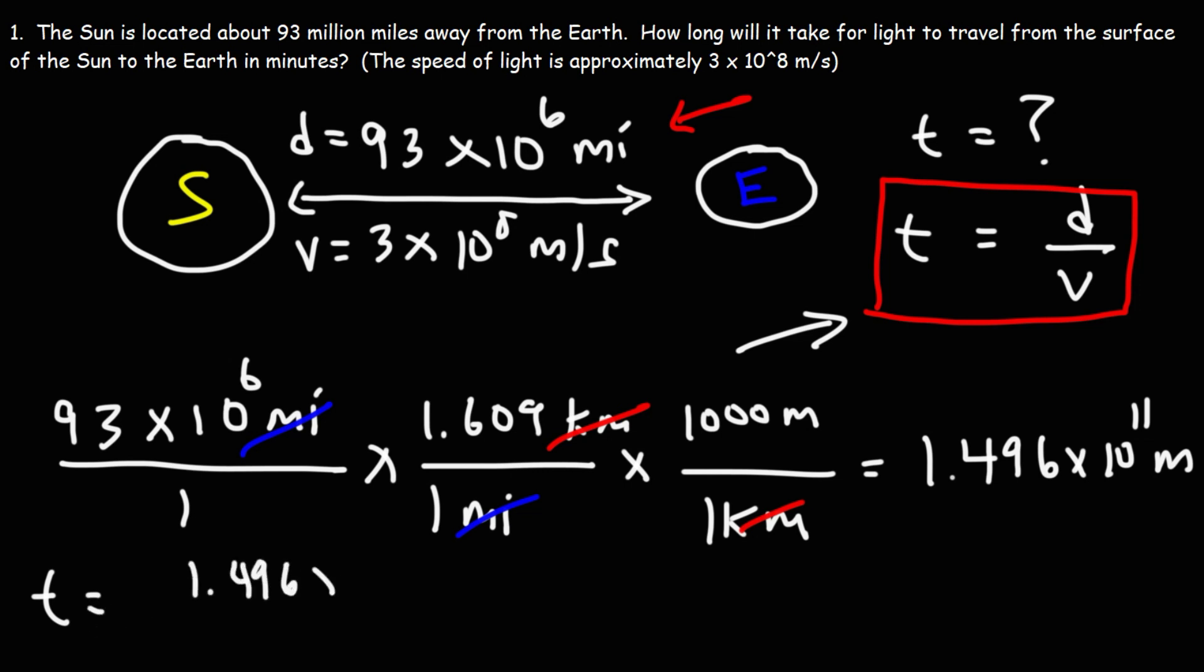So the distance is 1.496 times 10 to the 11 meters, and we are going to divide that by the speed, which is 3 times 10 to the 8 meters per second. So the unit meters will cancel, leaving us with the unit seconds. And when you divide these two numbers, you're going to get 498.79 seconds.